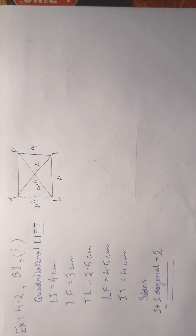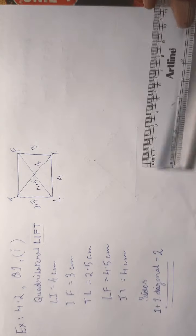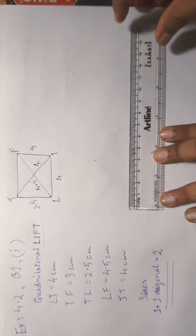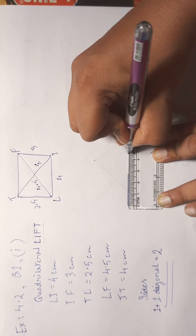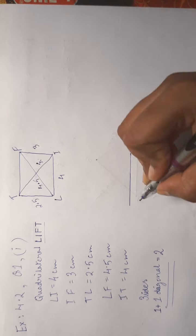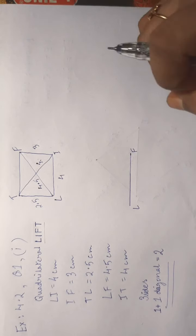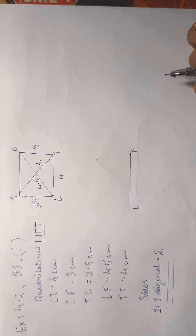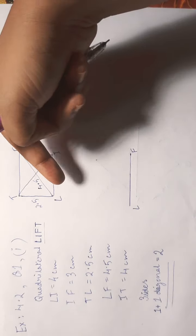Let us start with the construction. We will first draw the diagonal LF, which is 4.5 centimeters. Here it is — don't forget to give the names right away, otherwise you might get confused about which side is which.